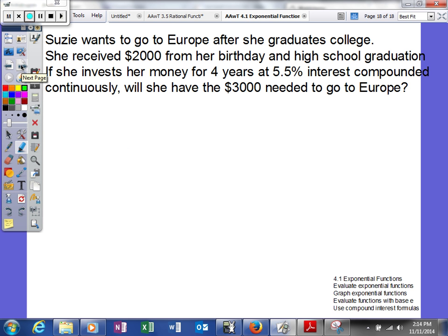So let's revisit Susie's problem and see if she can actually go to Europe now. Susie wants to go to Europe. She invested $2,000 for four years at 5.5% interest compounded continuously. So we'll say A equals Pe to the rt power, and we'll plug the values in. So A is equal to $2,000, and then E to the 0.055 times 4 power.